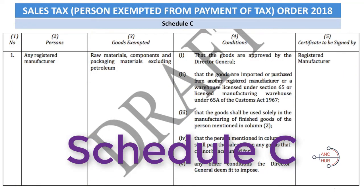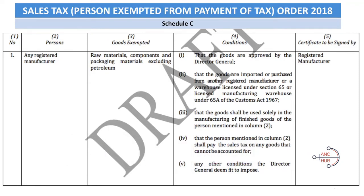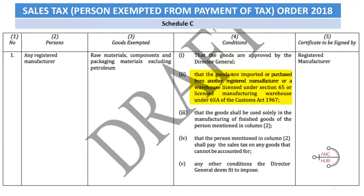Schedule C is one of the most important exemptions which we can apply for. Previously it was called CJ5, but now it has been changed under Schedule C. Looking at number 1: any registered manufacturer can be exempted for raw materials, components, and packaging materials — excluding petroleum. The conditions are that you must be approved by the Director General, and the goods must be either imported or purchased from another registered manufacturer where sales tax was charged.